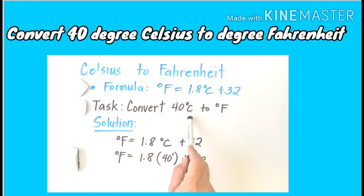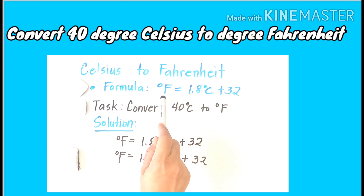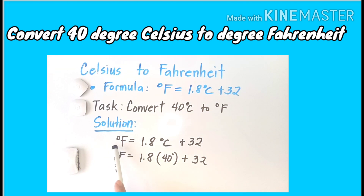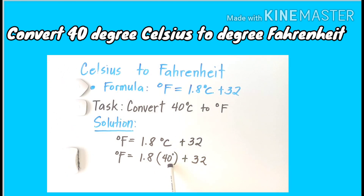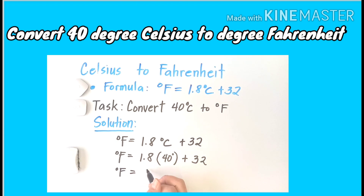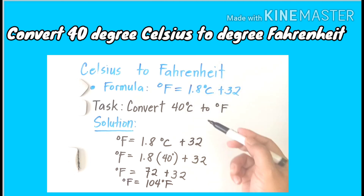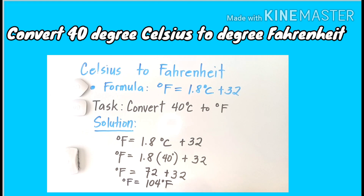Now we're going to convert 40 degrees Celsius to degree Fahrenheit using the second formula: degree Fahrenheit equals 1.8 times degree Celsius plus 32. As you can see, I have the formula here. Degree F equals 1.8 times degree Celsius plus 32. Plugging in the given value: degree F equals 1.8 times 40 plus 32. Multiplying 1.8 by 40 gives 72, so the answer is 104 degrees Fahrenheit. Therefore, 40 degrees Celsius is equal to 104 degrees Fahrenheit.